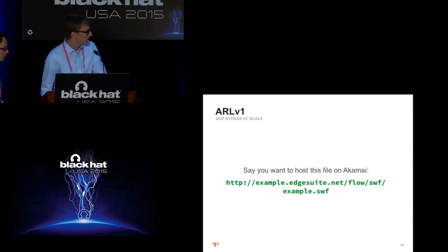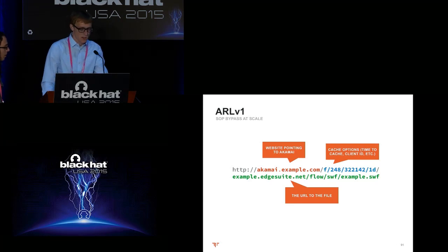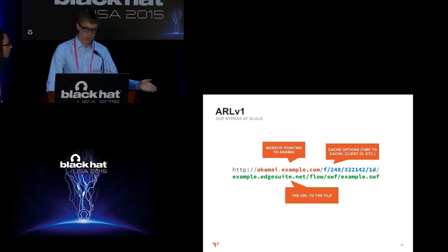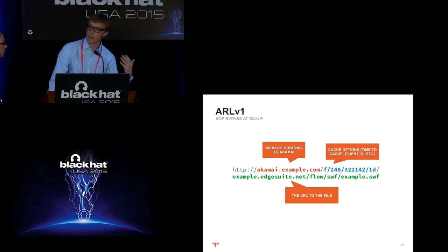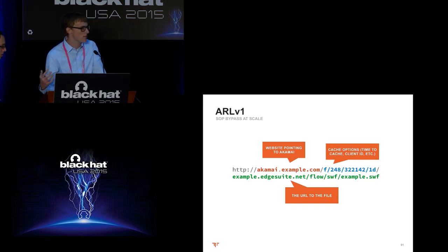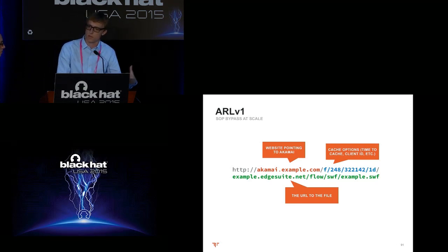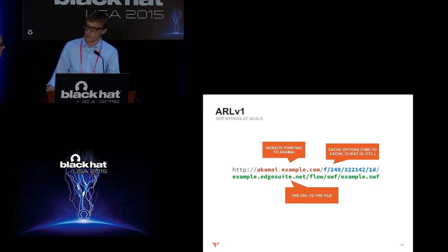We have an example SWF we want to load onto Akamai's network via ARL v1. We construct a URL with an Akamai endpoint and RESTful forward-slash parameters specifying: client ID, cache duration, and how often to check for changes — and we include the target URL. Remember the SSRF pattern Mike mentioned: an arbitrary URL is specified and the server fetches that content and returns it. This is essentially the same flow as SSRF. There may be vulnerabilities here. This process is known as Akamaiization — the user visits the URL, Akamai fetches content from the specified server, and returns it invisibly.